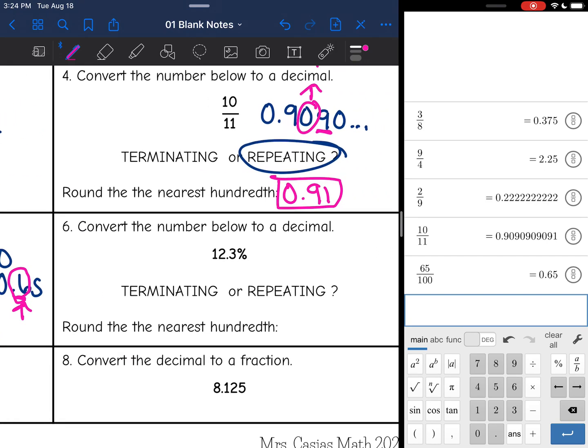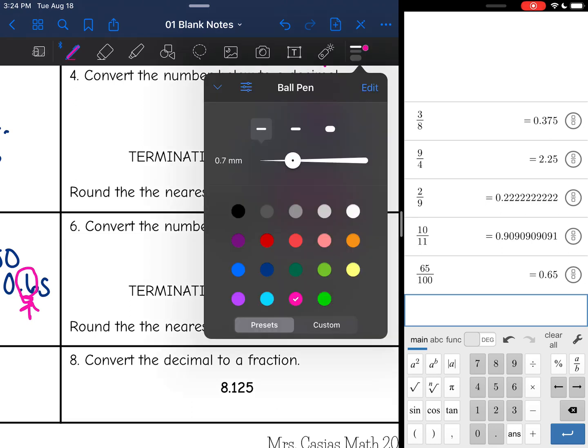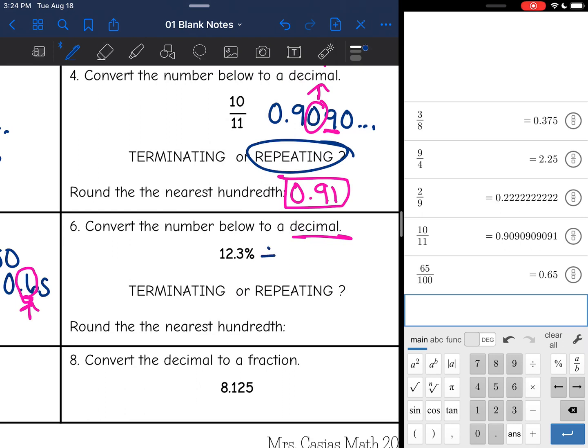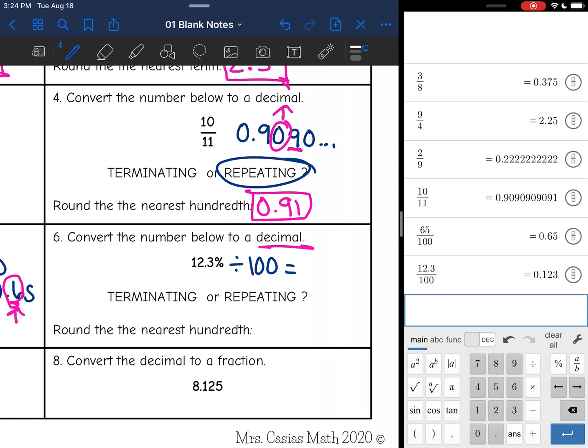Okay, another percent, it says convert it to a decimal. I know that there's a decimal in the percent, but since it has that percent sign, we still need to divide it by 100. That means it's out of 100, so we're going to divide it by 100. So 12.3 divided by 100, I get 0.123.